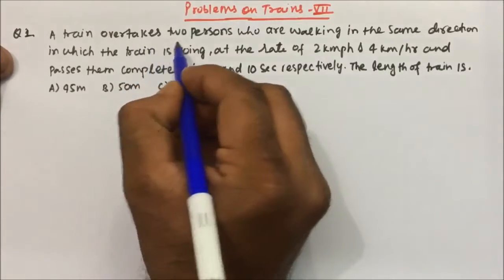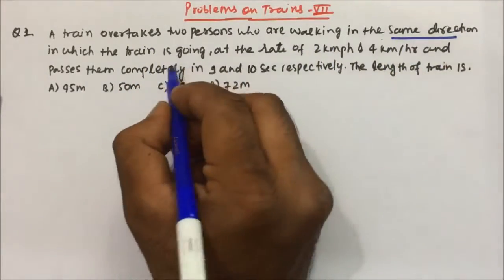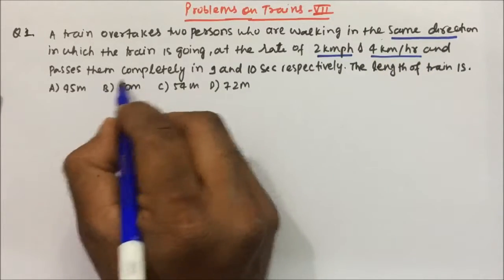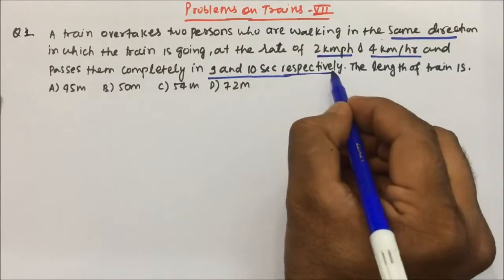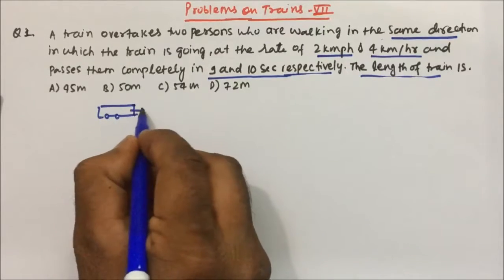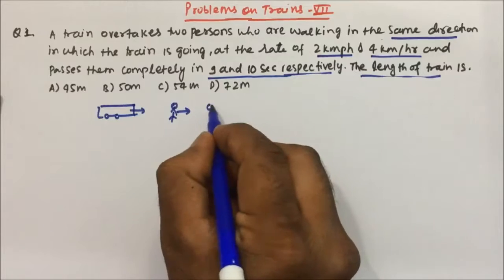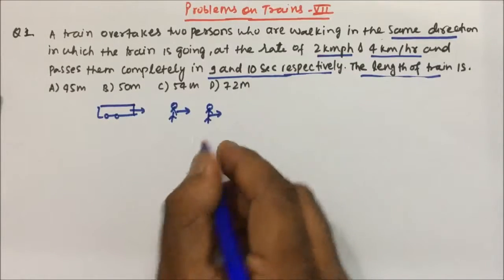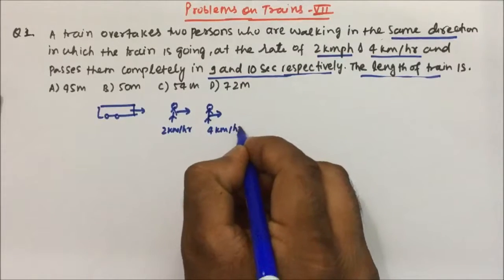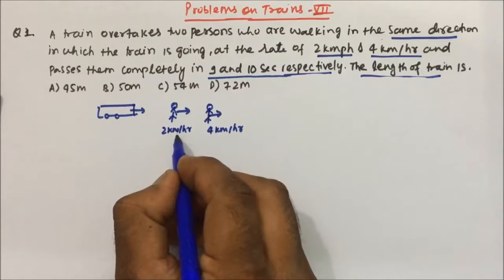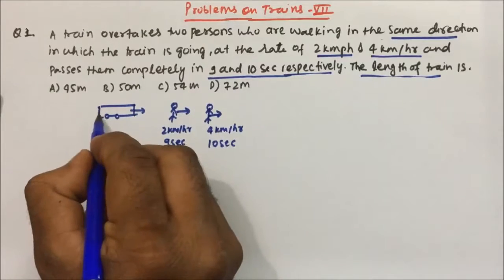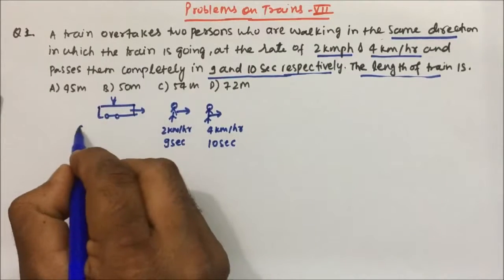The question is: a train overtakes two persons who are walking in the same direction in which the train is going, at the rate of 2 km/h and 4 km/h, and passes them completely in 9 and 10 seconds respectively. Find the length of the train. The persons are moving in the same direction as the train. We assume the length of the train is y and the speed of the train is x.